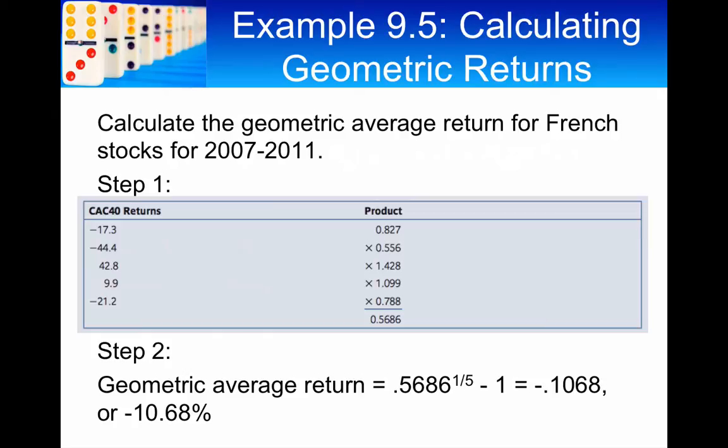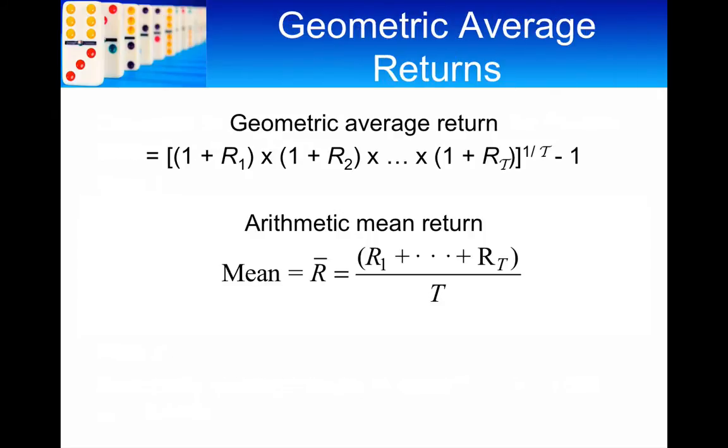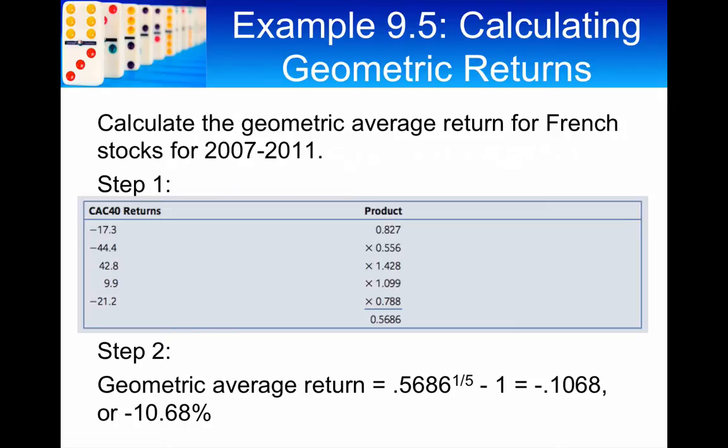And what we do is we're going to calculate the geometric average return. In this particular case, remember, the first thing we do is we do 1 plus R1. So, 1 plus open brackets minus 0.173, close bracket, is equal to 0.827. Now, if you take the third observation, 1 plus 0.428. Well, that's simple. It's 1 plus 0.428. Now, you multiply each of those 1 plus R's together. There's five of them. And by multiplying, you get a value of 0.5686.